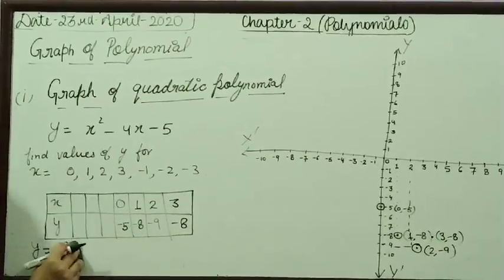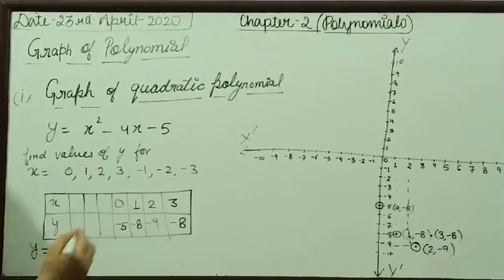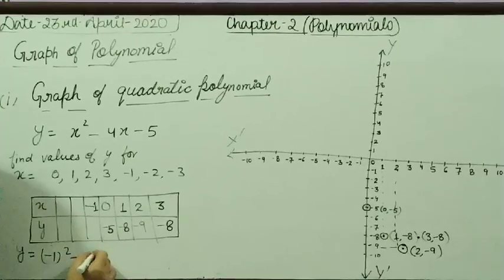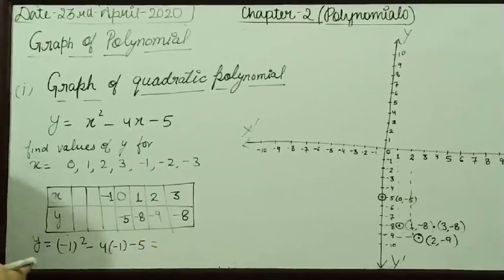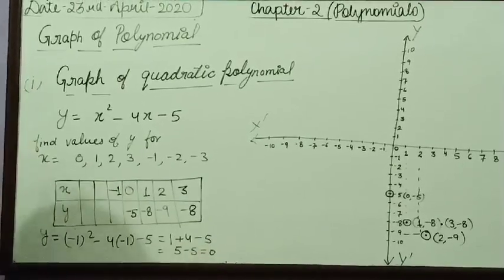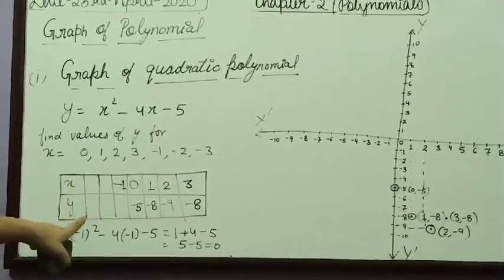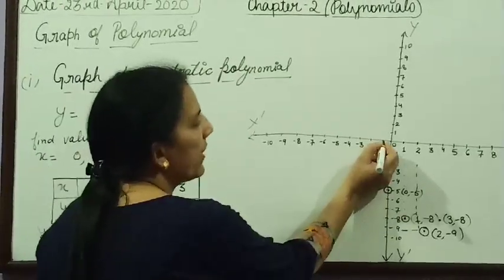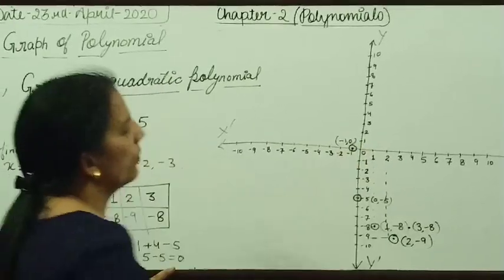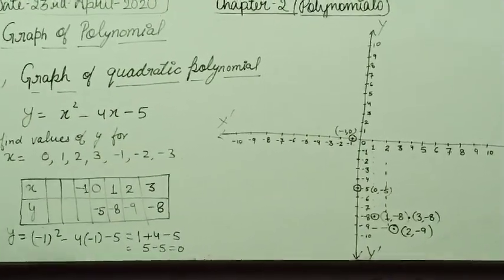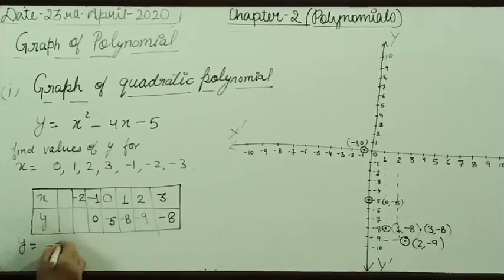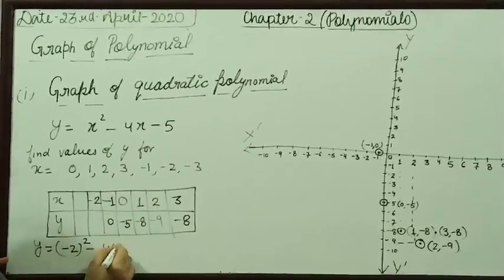Now we are checking this graph with negative values of x, starting with minus 1. Put in place of x minus 1: minus 1 whole square minus 4 into minus 1 minus 5. You get plus 1 plus 4 minus 5, which means 5 minus 5 is equal to 0. So, when x is minus 1, y is equal to 0. The point is (-1, 0), which is touching the x-axis.